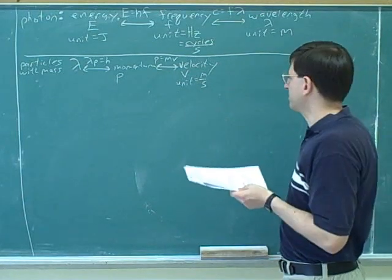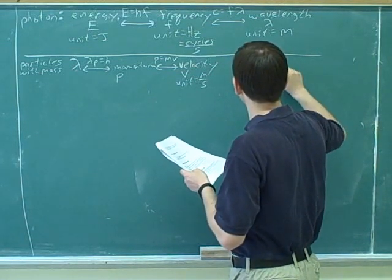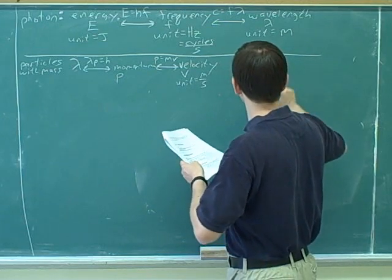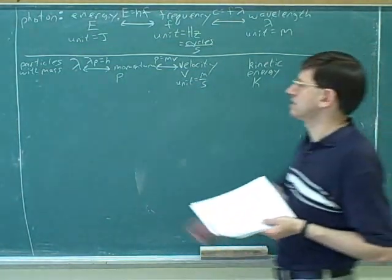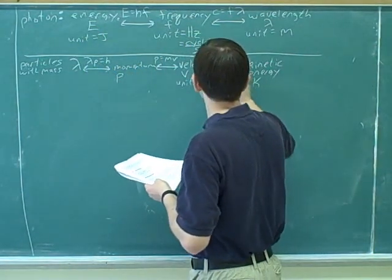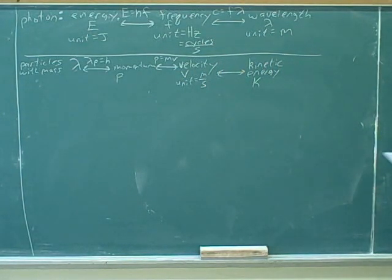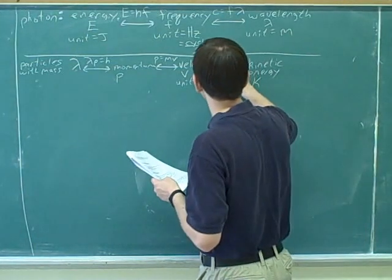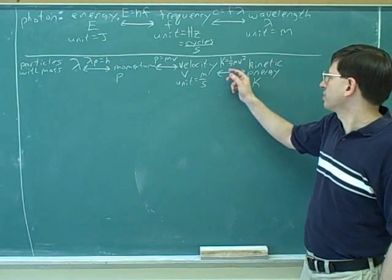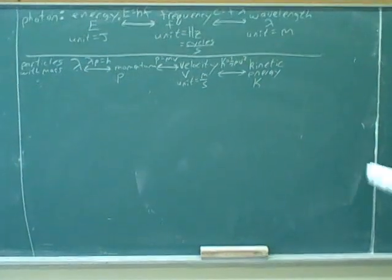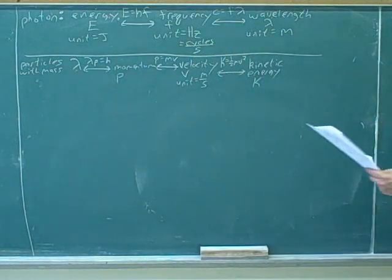Alright, now if we know the velocity, it would be nice to find the kinetic energy. What's the unit for kinetic energy? Joules, because it's a type of energy. Good. Well, if we know the velocity, how would we find the kinetic energy? One half M V squared. Alright, good. So you can see the way the flowchart works is that above each arrow, we want to put the formula that relates the concepts. Alright, you can see how these problems can get tough because you have to string together a whole bunch of formulas in a row to actually solve it. So it helps to have them all in one place.